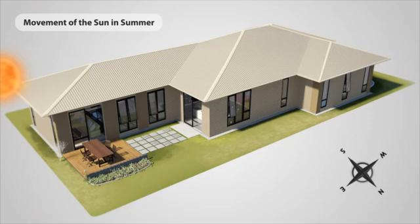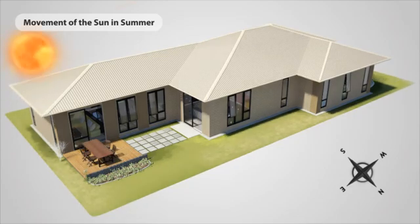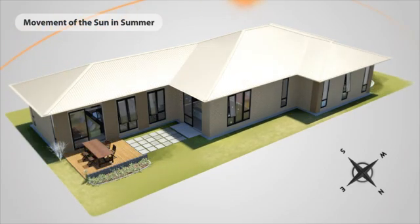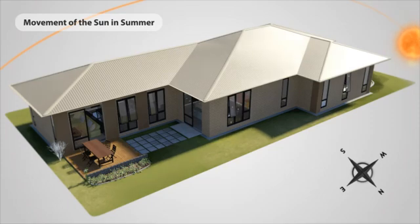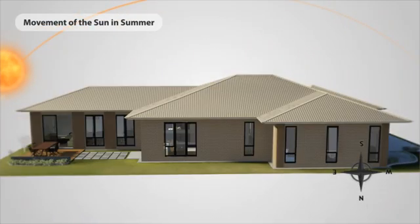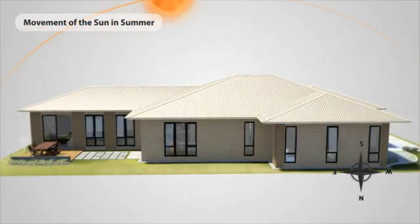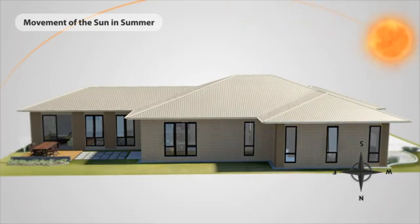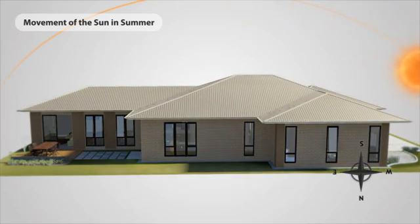It's important you understand the movement of the sun in relation to your block selection and your home design. You can see here the rotation of the summer sun. In summer the sun is higher in the sky. By designing your home correctly, you can make sure the home is shaded in summer with eaves and other shading devices. From this view you can see that the sun is not streaming into the north side windows, keeping the home cool on summer days.